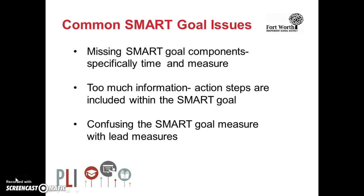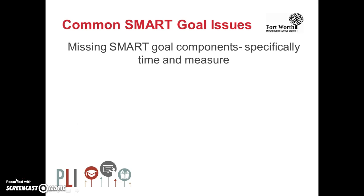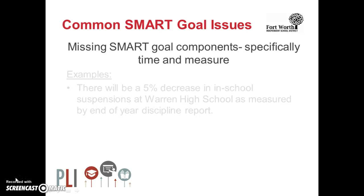Next, let's look at our SMART goal issues. SMART goals are not the easiest to write. In fact, there are three common issues seen with SMART goals that you will want to consider when reviewing your goal. The first issue is the absence of time and measure — make sure your goal has a date and standard for measure. Another common issue is having way too much information, often all of the action steps listed within the goal. The how doesn't need to be included in your goal, just what you're going to accomplish. The last issue commonly seen is the inclusion of lead measures within the goal. A lead measure is the measure you track to see if you are on course for reaching your goal. The SMART goal should only include the lag measure.